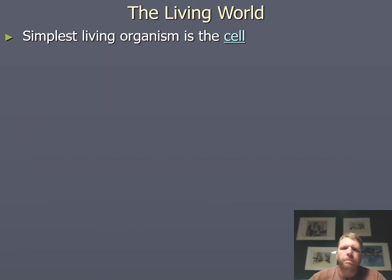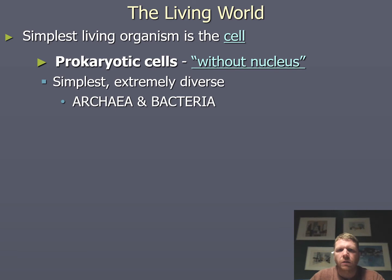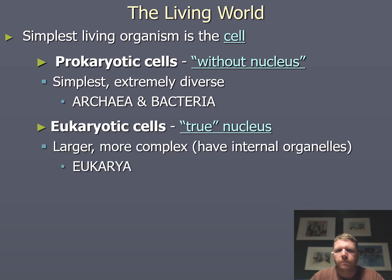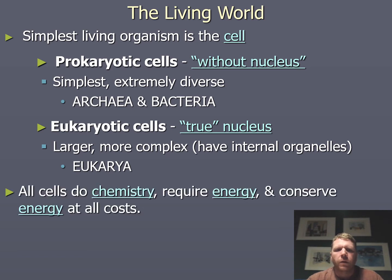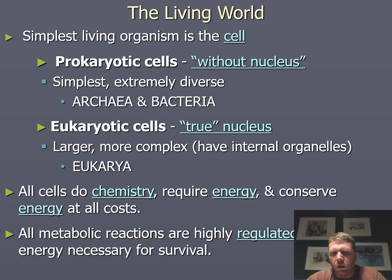The living organism at its simplest is the cell. A prokaryotic cell is a cell that does not have a nucleus — the simplest form, and extremely diverse, falling into two major categories: archaea and bacteria. A eukaryotic cell is a larger, more complex cell in the domain Eukarya. All these different cells do chemistry of some sort — they require energy, and all metabolic reactions are highly regulated to provide the energy necessary for cellular functions.